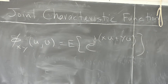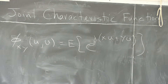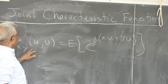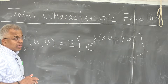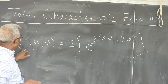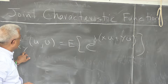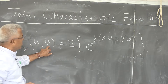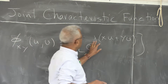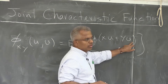Let us look at joint characteristic function and its usefulness and properties. You may recall that we defined the characteristic function for one random variable, but if you have two random variables X and Y, we need two variables. It is the expected value of e raised to the power j(xu + yv).